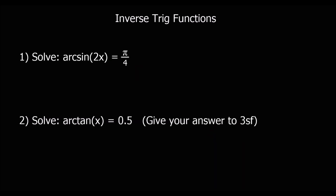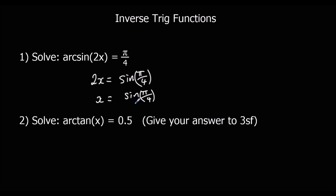Here are a few equations involving the inverse trig functions. If you had an equation with arcsine in it, the way to get rid of arcsine — the inverse of arcsine — is sine. So if we apply sine to both sides, we'll get 2x equals sine of pi over 4. And to get x by itself, we divide by 2, so we'll have sine of pi over 4 over 2. We can type that into the calculator and we'll get root 2 over 4.